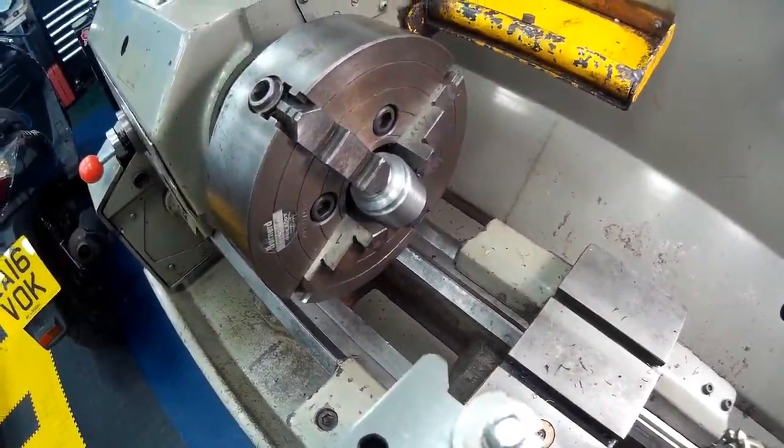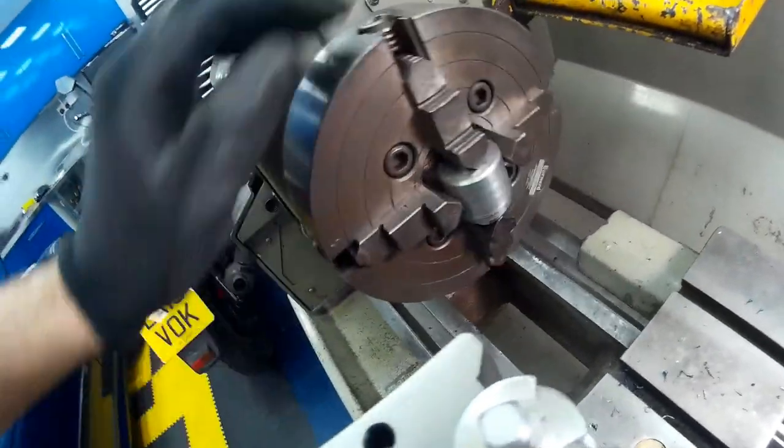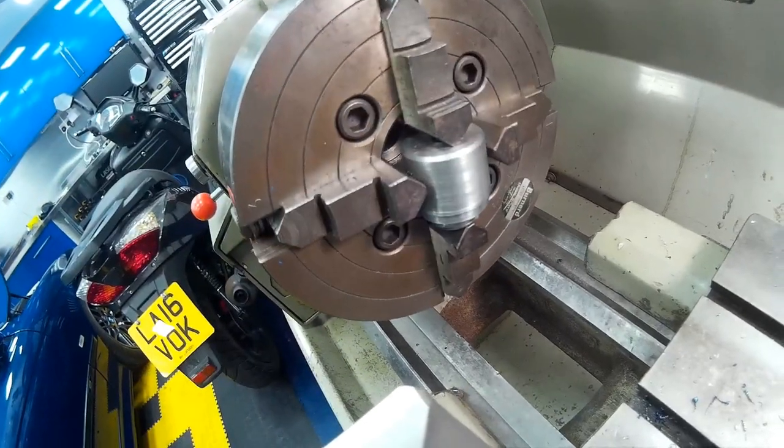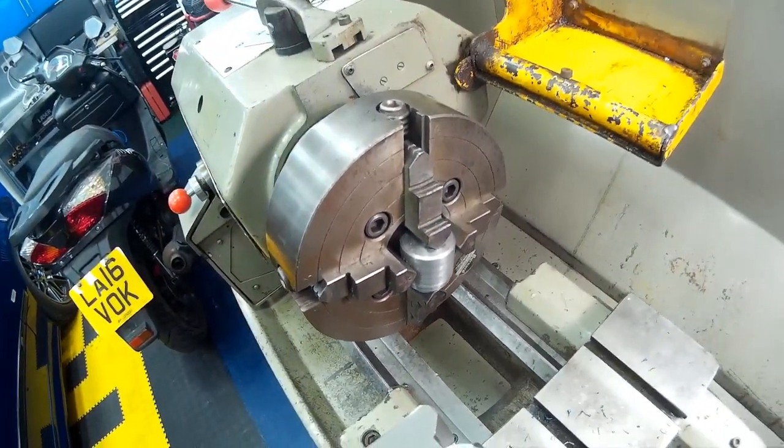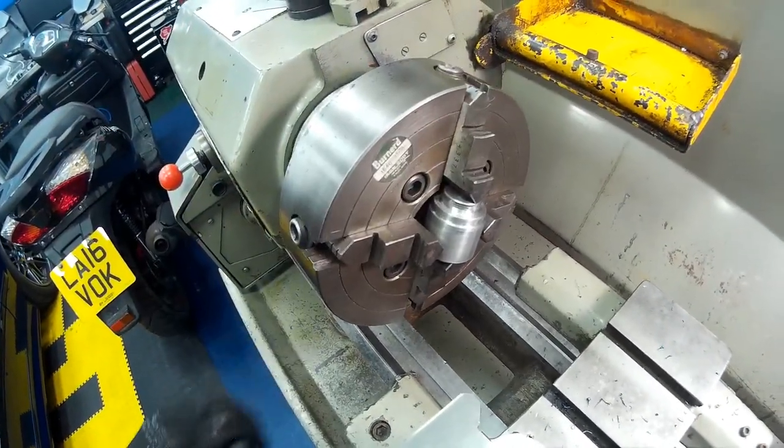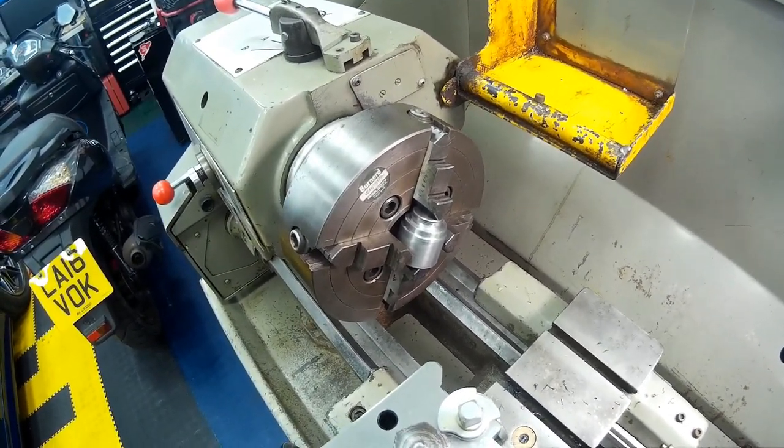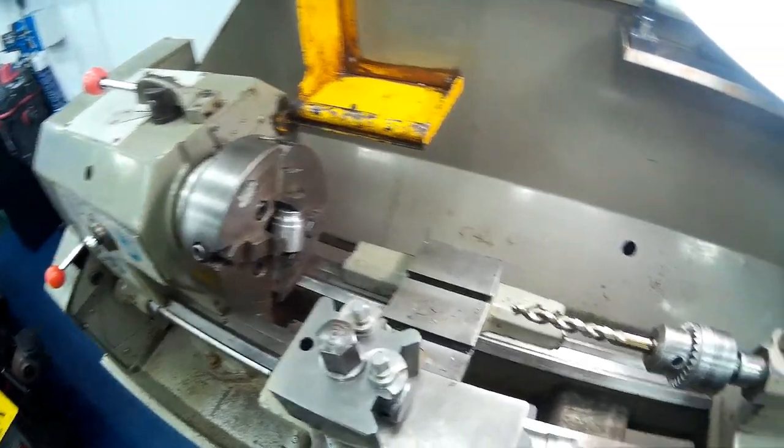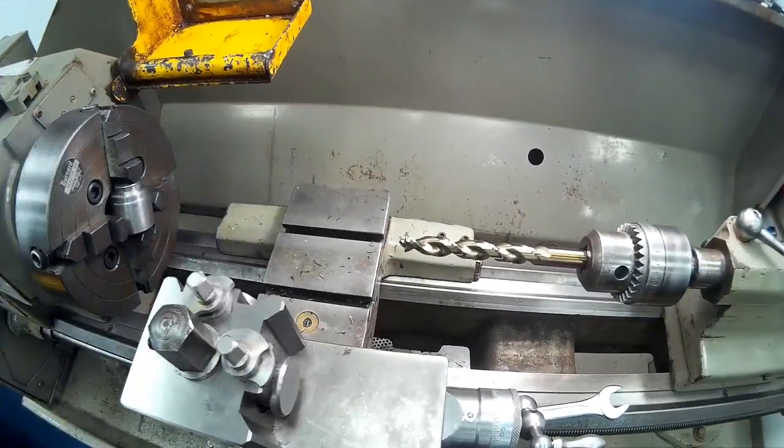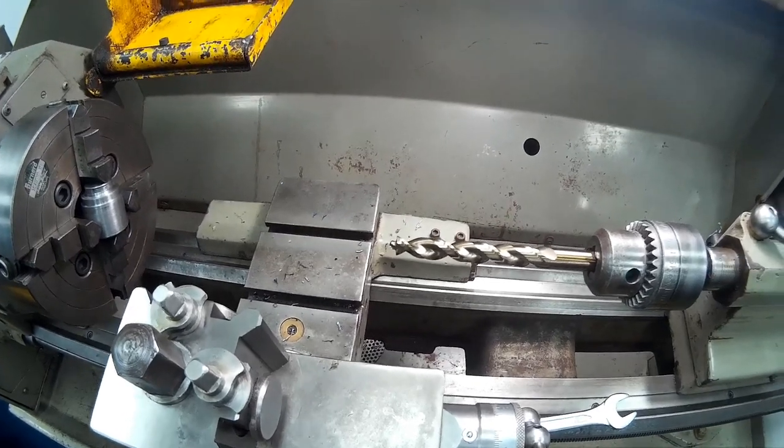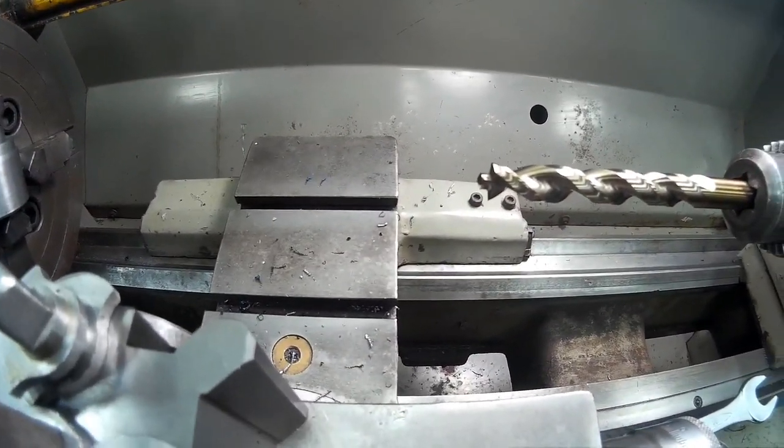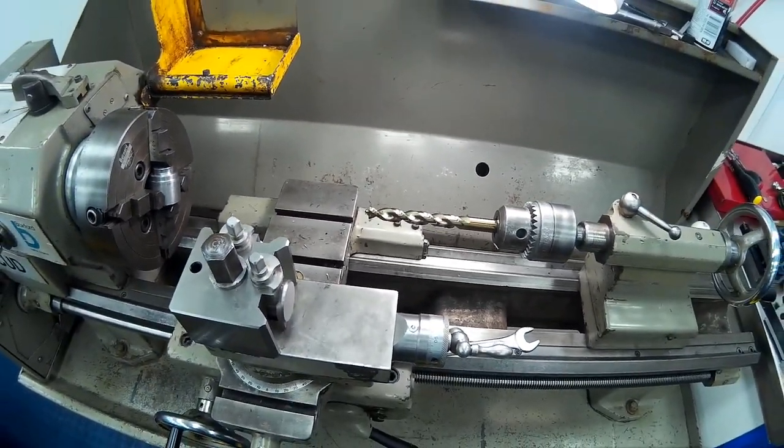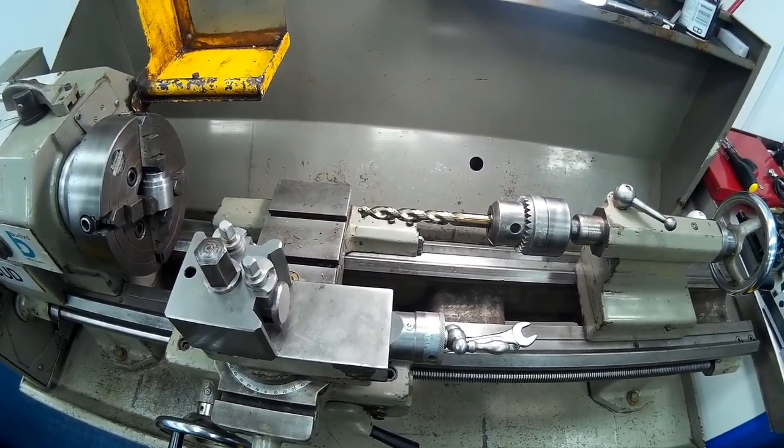Once you've got your spindle plug chucked up in your four jaw and you've marked the central point and you're happy with it, then you can put a centre drill in and then drill out to your desired diameter for your magnet. So my magnet is 12mm, so I'm using an 11.5mm titanium drill with built-in centre drill. I'm going to drill out to a depth of around about 3mm.